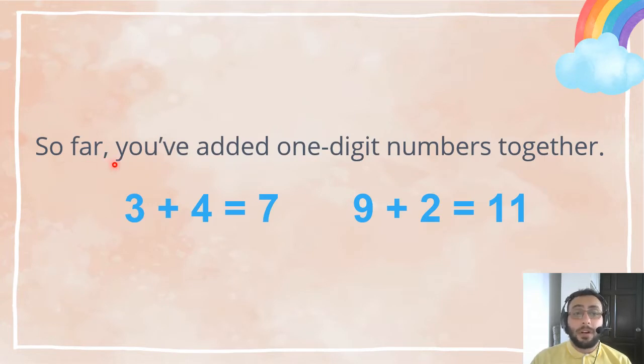So far you have added one-digit numbers together. For example, three plus four, one digit and one digit, right? Which equals to seven. Nine plus two equals eleven. See, nine is one digit, two is one digit. We learn how to add one-digit numbers together.